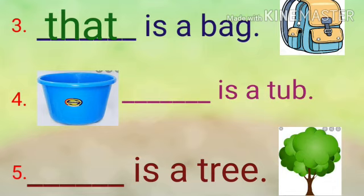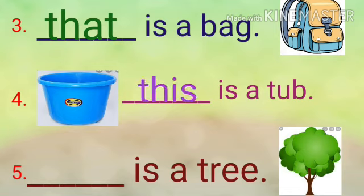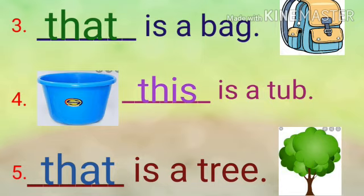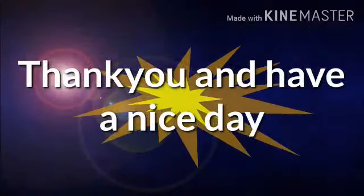In number four, you can see a picture of a tub. It says: 'Dash is a tub.' The picture of the tub is near to the dash, so for near objects we will use 'this'. This is a tub. Now number five: 'Dash is a tree,' and a picture of a tree is there. The picture of the tree is far away from the dash, so for far objects we will use 'that'. That is a tree. Thank you and have a nice day.